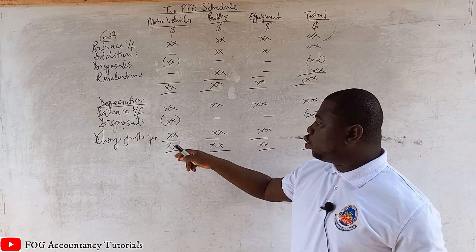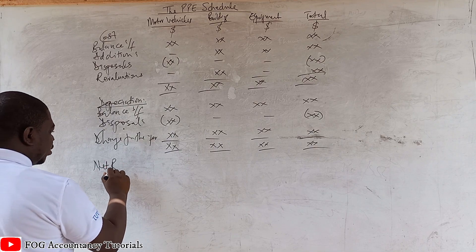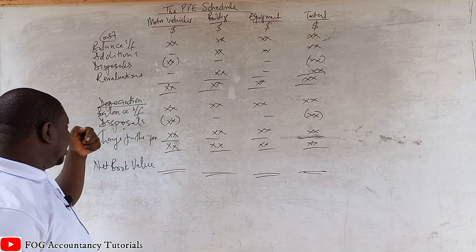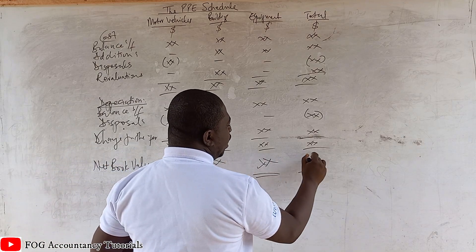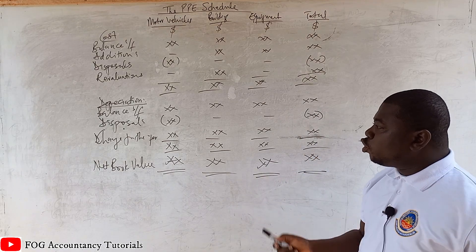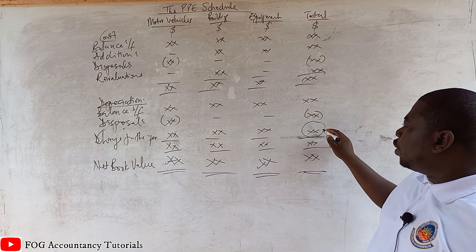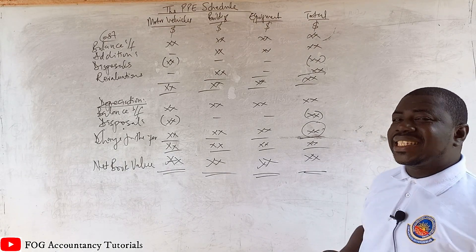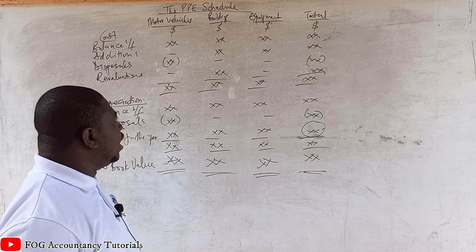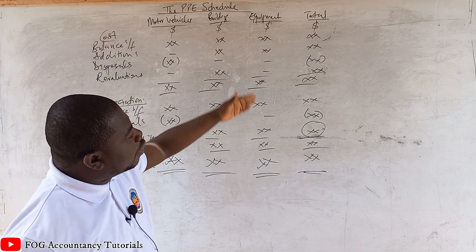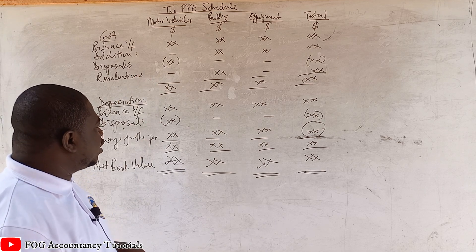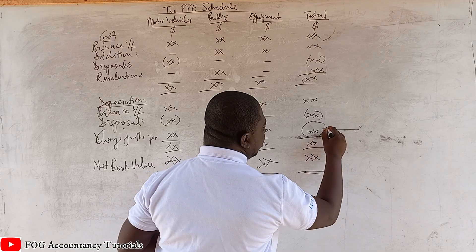Once you have your depreciation charge for the year, we are done with the totals. We now have total cost and total depreciation. The next thing is the net book value — cost minus accumulated depreciation — shown for each asset with a double underline. And ladies and gentlemen, when you do this, you are done with your PPE schedule. Note that this schedule has given you a total depreciation to use in your statement of profit or loss, except the question requires depreciation to be taken to different places.